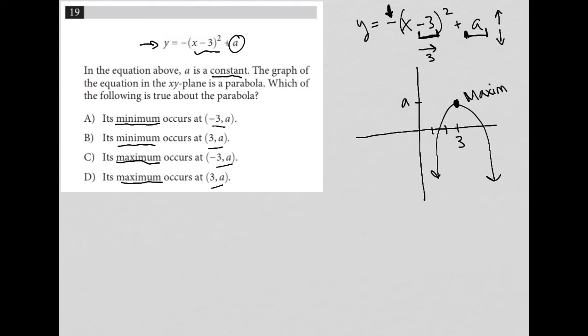This is the maximum or the highest value that this parabola can have. And we actually know that the ordered pair for that maximum is 3 in the x-axis, comma A in the y-axis.